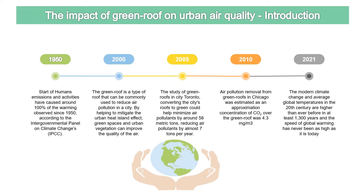In this slide, we have a timeline that begins in the 1950s when collection of human emissions started. This activity has caused around 100% of warming observed according to the Intergovernmental Panel on Climate Change in 2000. We already have definitions of green roofs as measures against air pollution in the city.